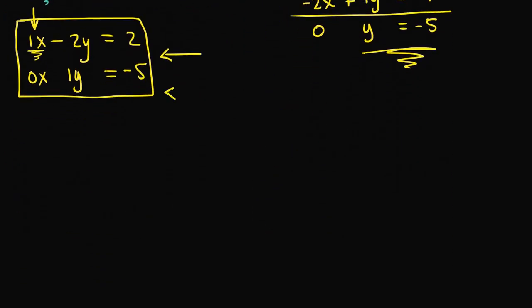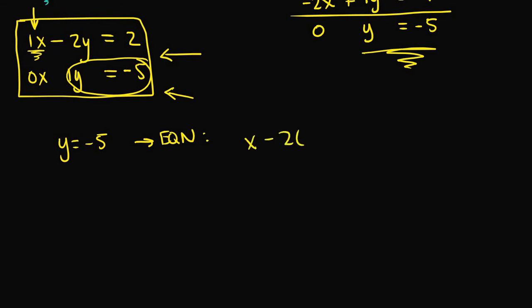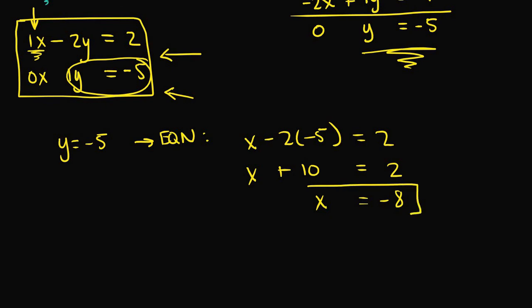Since this system is in row echelon form, we can use back substitution to solve for x and y. Starting at the bottom, y equals negative 5. Plugging into equation 1: x minus 2 times negative 5 equals 2, so x plus 10 equals 2, and subtracting 10 from both sides gives x equals negative 8. The solution set is x equals negative 8 and y equals negative 5.